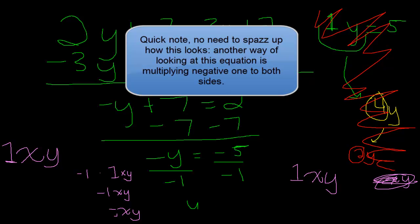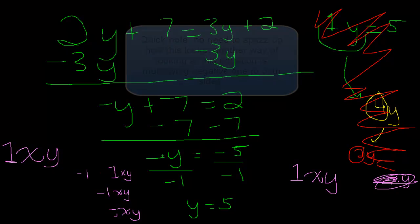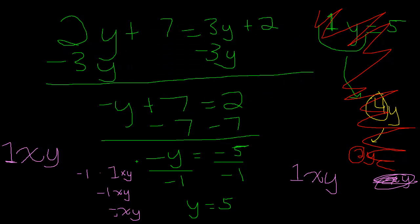This gives us y equals 5. Negative y divided by negative 1 - that is, negative 1y divided by negative 1 - gets you just plain y. The negatives cancel out. When you're dividing two negative numbers,